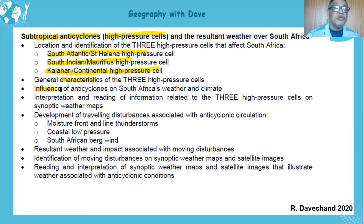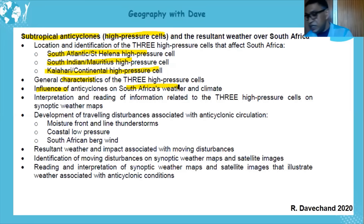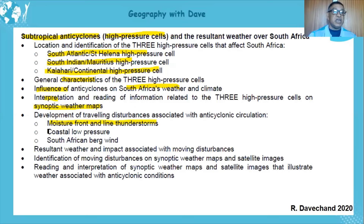We're going to look at characteristics and the influence on South Africa's weather, which plays such an important part in determining our weather conditions for summer and winter. We'll interpret synoptic weather maps with these high pressure systems, look at traveling disturbances — the moisture front, line thunderstorms, coastal low and berg wind — identify them on synoptic maps and satellite photographs, and interpret synoptic maps looking at different seasons.